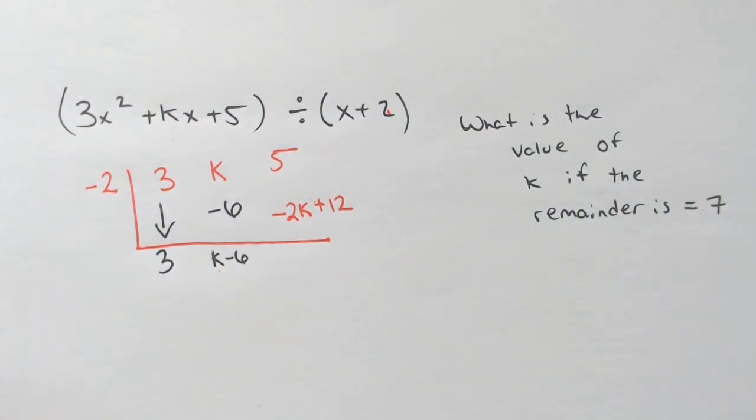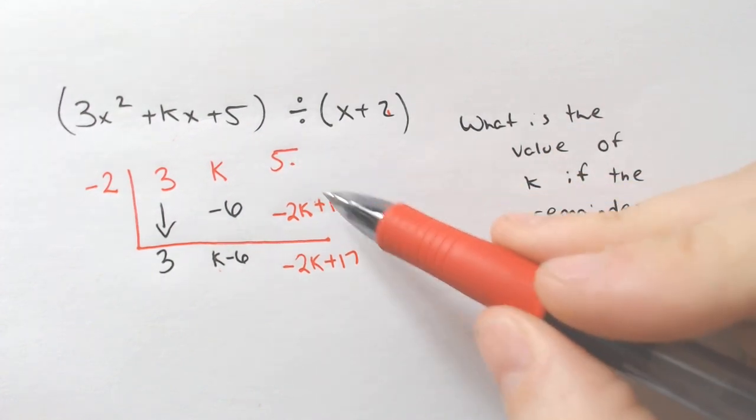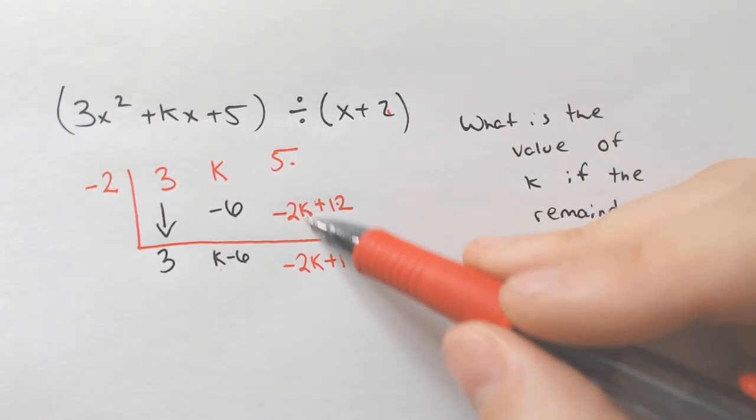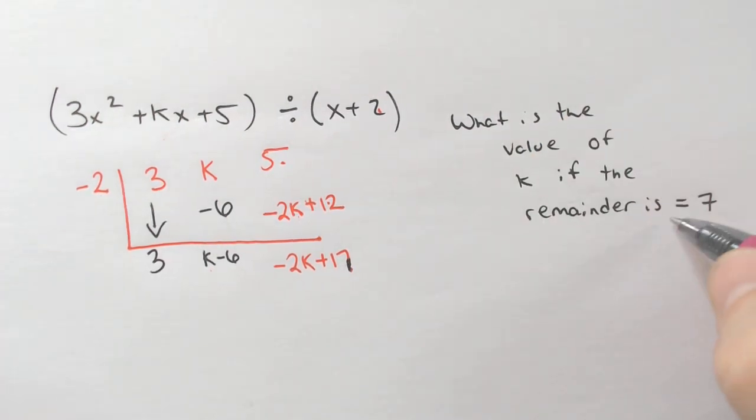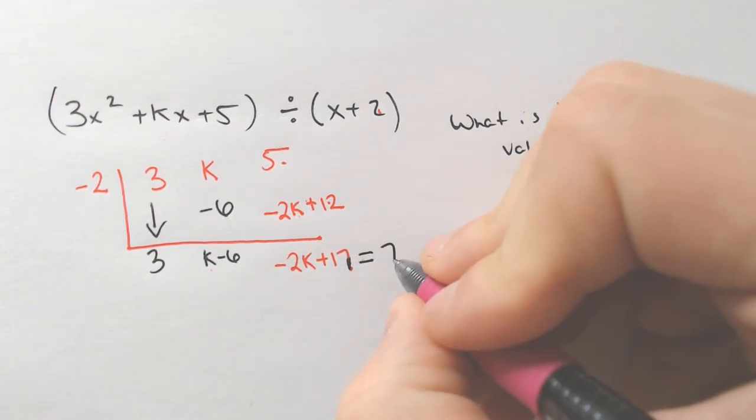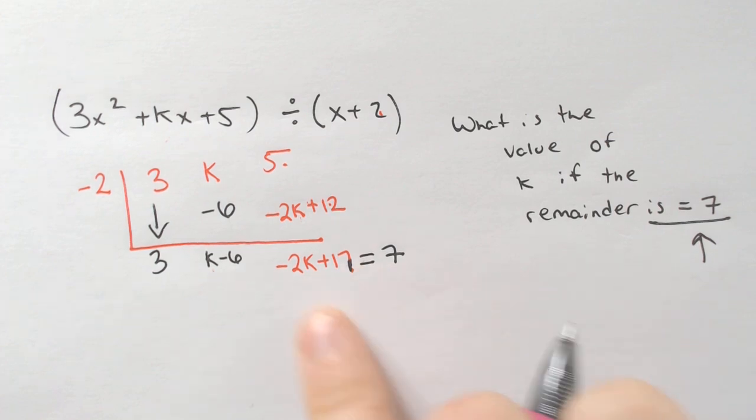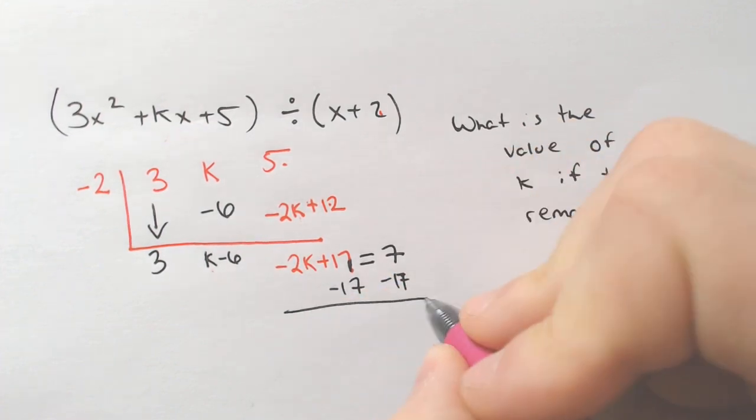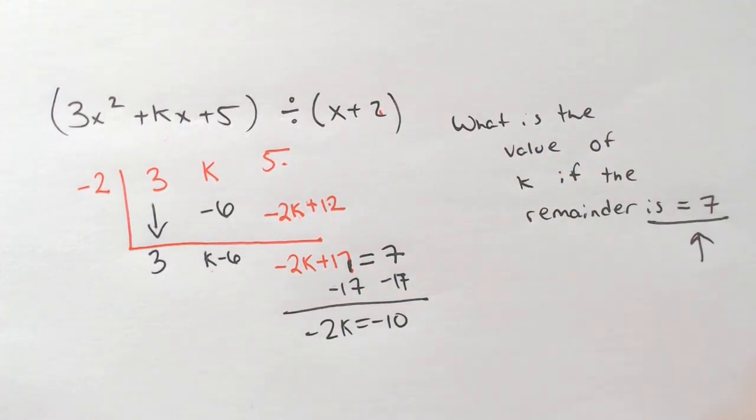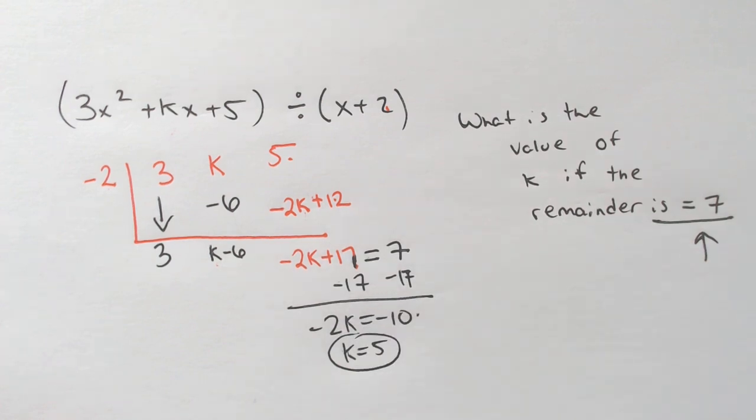All right, and if we add straight down here, we'd get negative 2K plus 17, because 5 and 12 are like terms, but negative 2K did not have any like terms. So we got negative 2K plus 17, and we're told that the remainder is required to equal 7. So if this is equal to 7, now we have an equation that we can solve, because this is what the remainder is, we can set it equal to the 7, and we can solve this equation. We could subtract 17, that's a bad looking 17, negative 2K would equal negative 10, and then when we divide, K would equal 5, because negative 10 divided by negative 2 is 5.